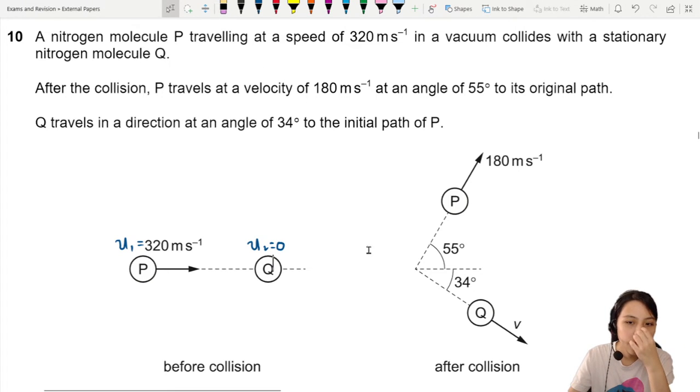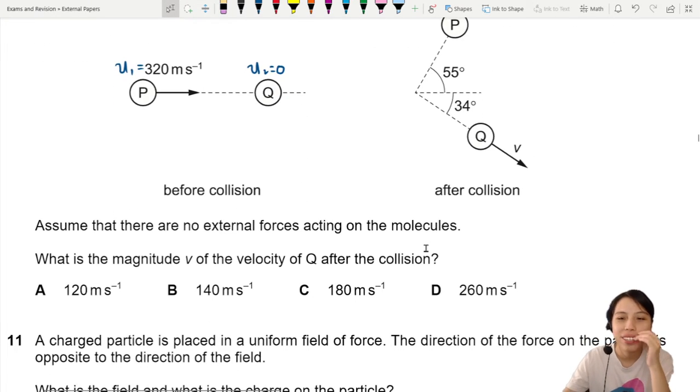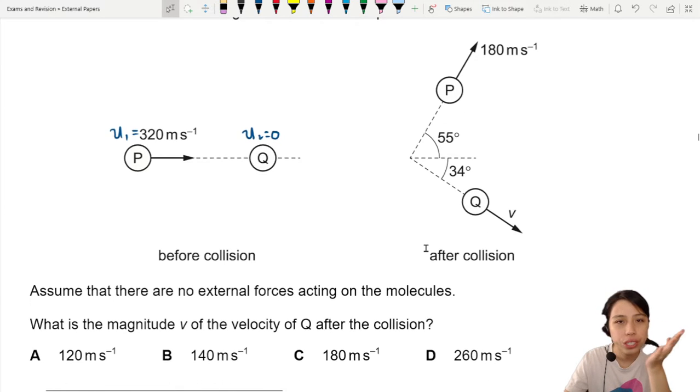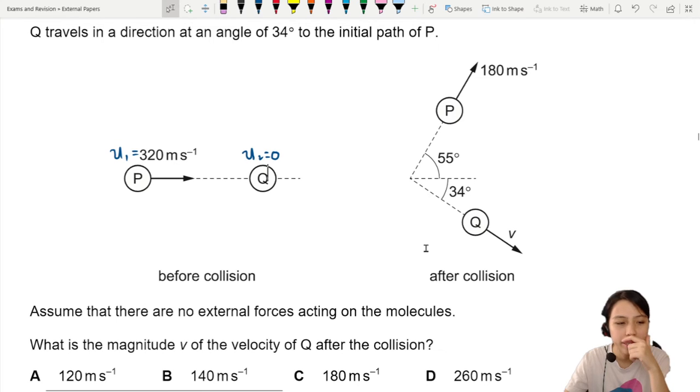After the collision, P travels at a velocity at an angle, Q travels at another angle downwards. This is a conservation of momentum. Assume that there are no external forces, no friction, no heat loss and things like that.